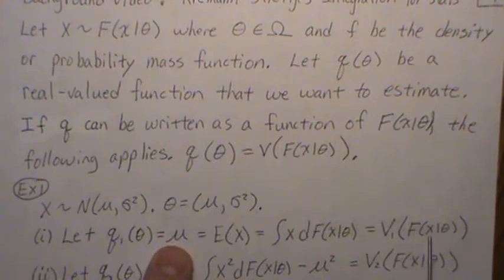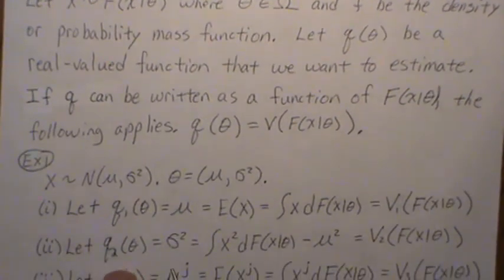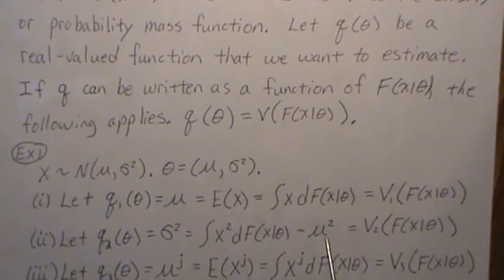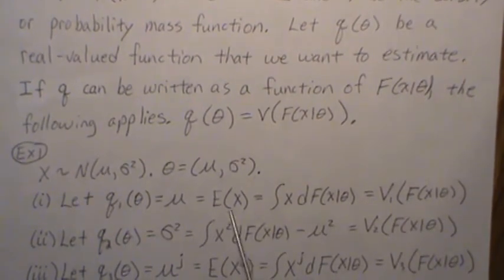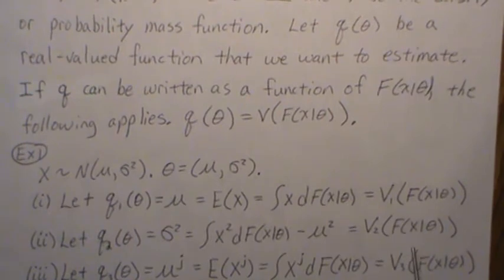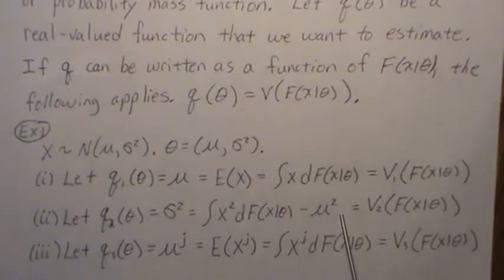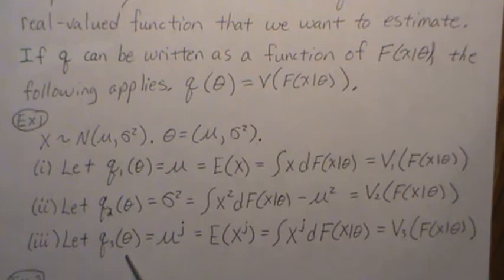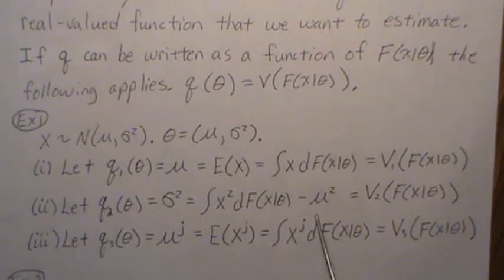Similarly, sigma squared is the integral of x squared dF(x) minus mu squared, both of which are functions of F — so it can be written as a function of the CDF. For the jth moment, q is the expected value of X to the j, which in Riemann-Stieltjes notation is the integral of x^j dF(x), clearly a function of F. There are many quantities that can be written as functions of the CDF.